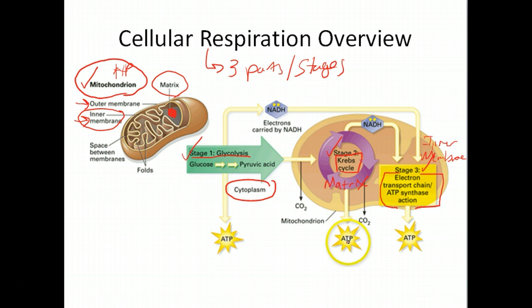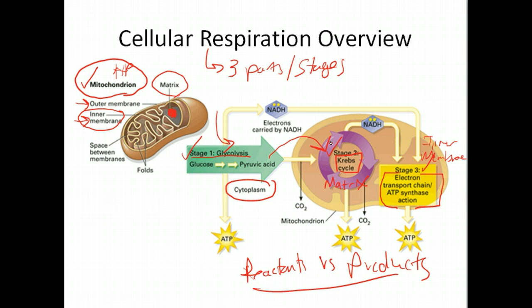So some location details that I need you to know for the test. I also need you to know the relationship between reactants and products for each of these. And we'll go over these in more detail as we go into the individual steps. But there's going to be a clear relationship where glycolysis will take in certain reactants into the process. It'll create products that then go to the Krebs cycle. Those products become reactants for the Krebs cycle.